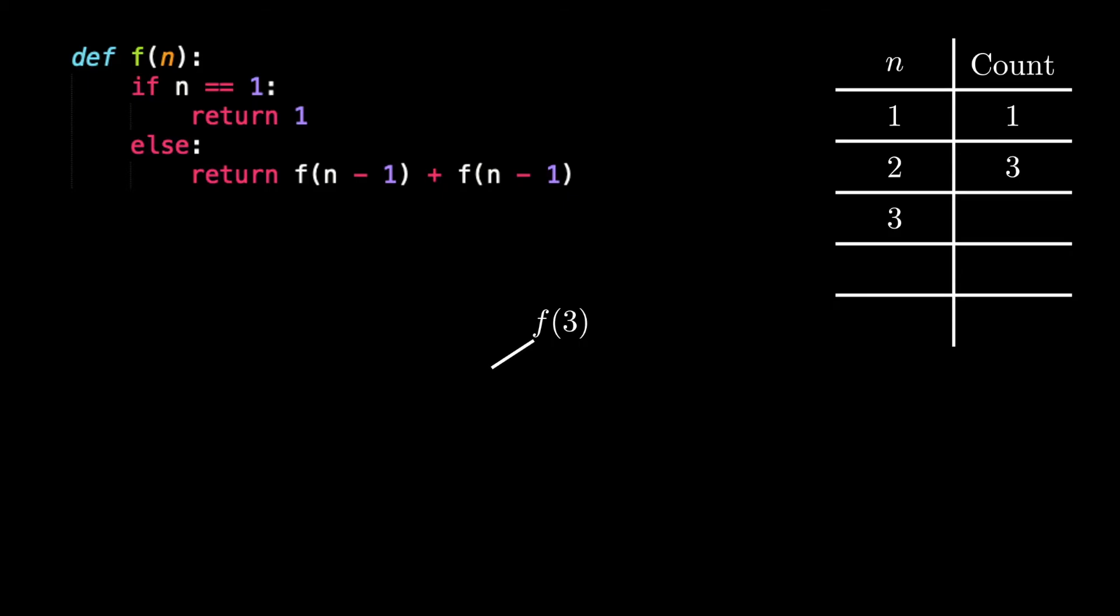If we now try the same approach to f of 3, you might start to see a pattern. f of 3 makes a call to f of 2 which then makes two calls to f of 1 which is the base case. After getting the answer to f of 2, we have to make another call to f of 2 to find the answer to f of 3. That second call to f of 2 leads to the same outcomes as the previous call to f of 2. We end up with a total of seven calls after going through this.